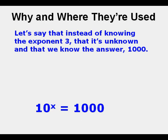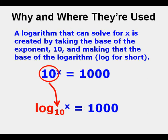Now, let's say that instead of knowing the exponent 3 that it's unknown and that we know the answer 1000. A logarithm that can solve for x is created by taking the base of the exponent, 10, and making that the base of the logarithm, or log for short.